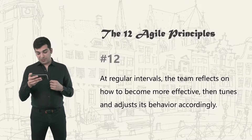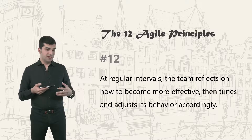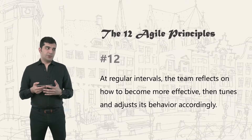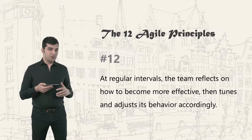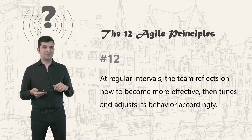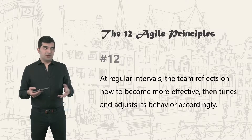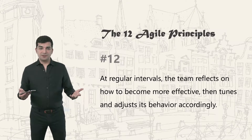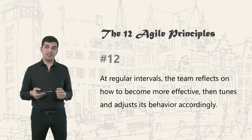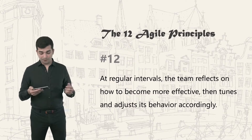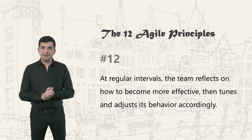The twelfth and final principle: at regular intervals the team reflects on how to become more effective, then tunes and adjusts its behavior accordingly. This type of meeting is called a retrospective. Since we already work in iterations — two, three, or four weeks — it's a good idea to hold a retrospective at the end of each iteration.